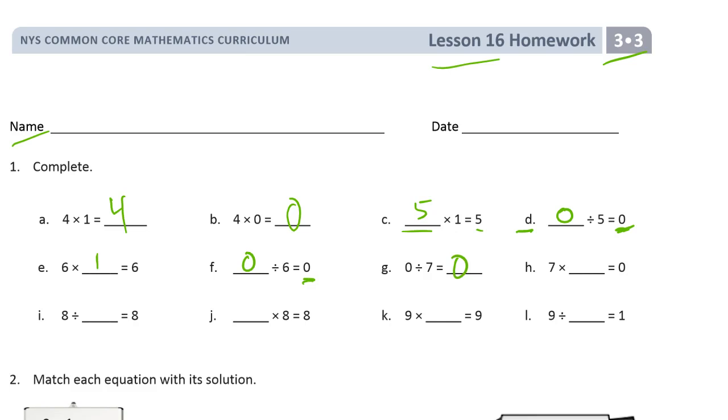And 7 times anything, the only way you can get 0 for a product is if 0 is one of the factors. 8 divided by, we can't have a 0 here. I know we've had 0, 0, 0, but 8 divided takes 1 8 to make 8. And it takes 8 1's to make an 8.